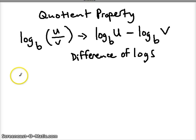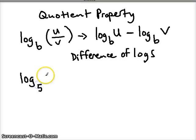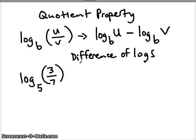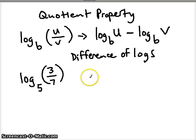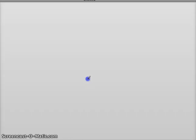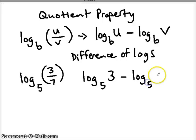Here's an example. Let's say that we have log base 5 of 3 divided by 7. Sometimes there'll be parentheses, other times there won't — it's still a quotient. So we rewrite that as a difference of logs: log base 5 with the numerator value minus log base 5 with the denominator value. And there's our difference of logs.